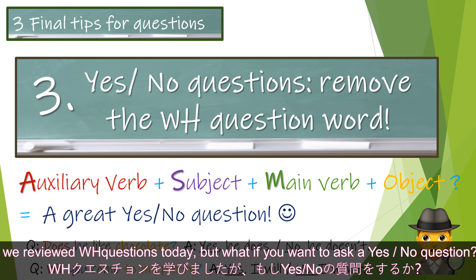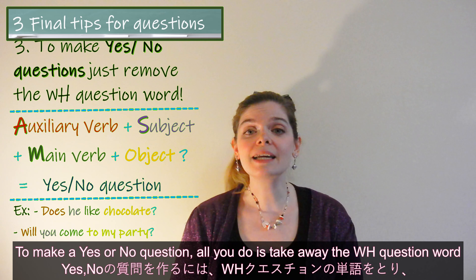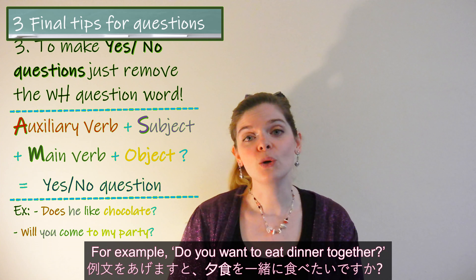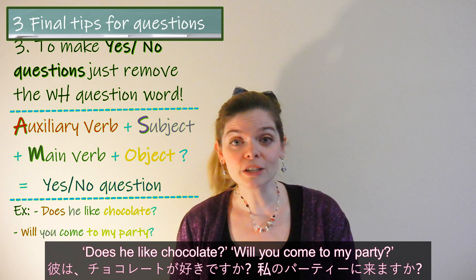The last thing I want to mention: we reviewed WH questions today. What if you want to ask a yes or no question? Since you know the formula Q, A, S, M, it's quite simple. To make a yes or no question, all you do is take away the WH question word and you will have your auxiliary verb, your subject, and your main verb. For example: Do you want to eat dinner together? Does he like chocolate? Will you come to my party?